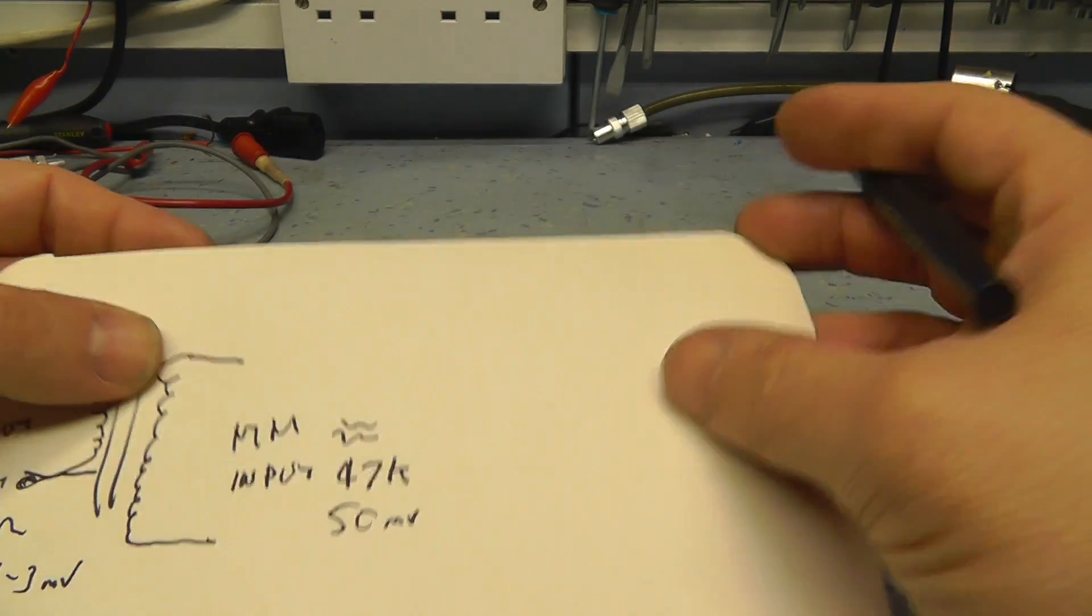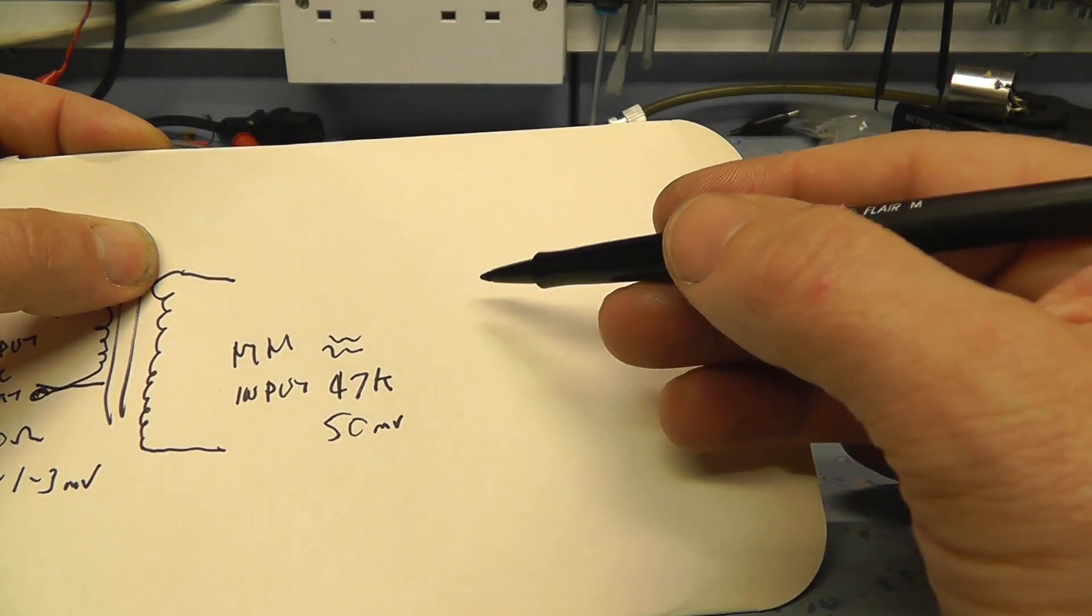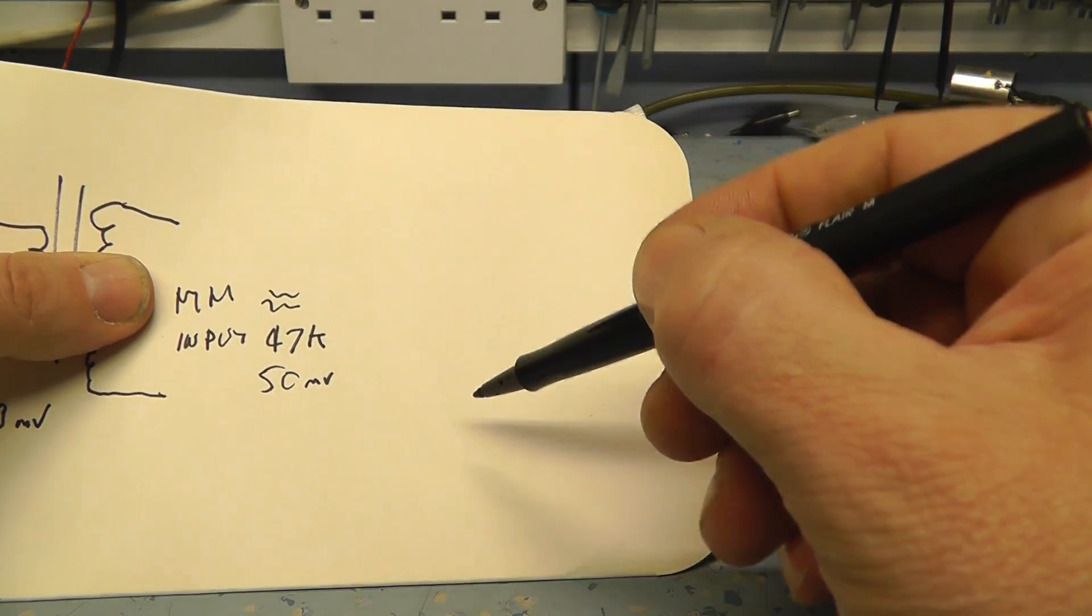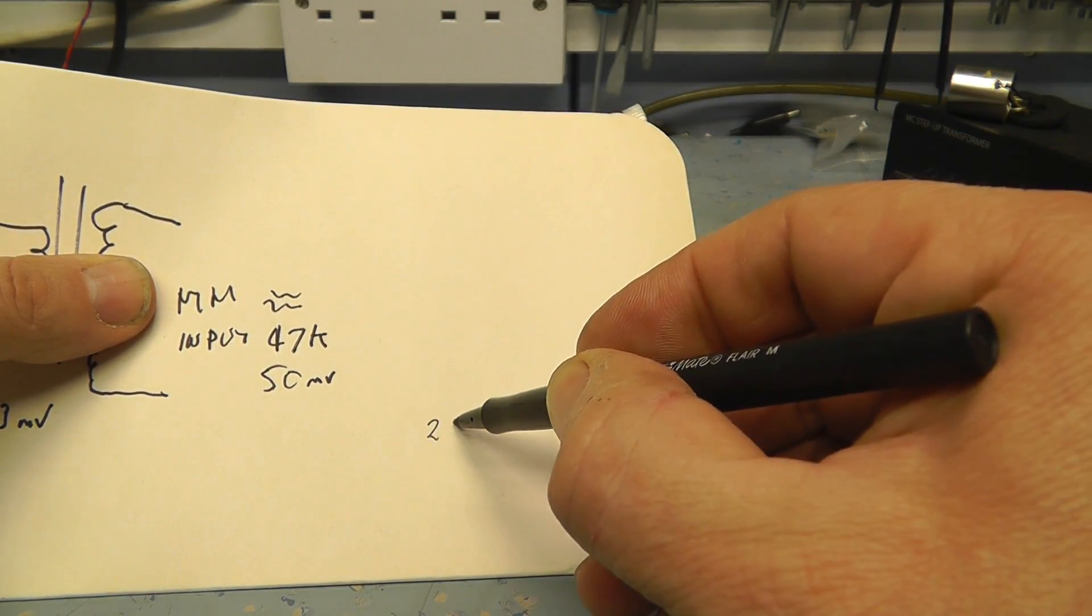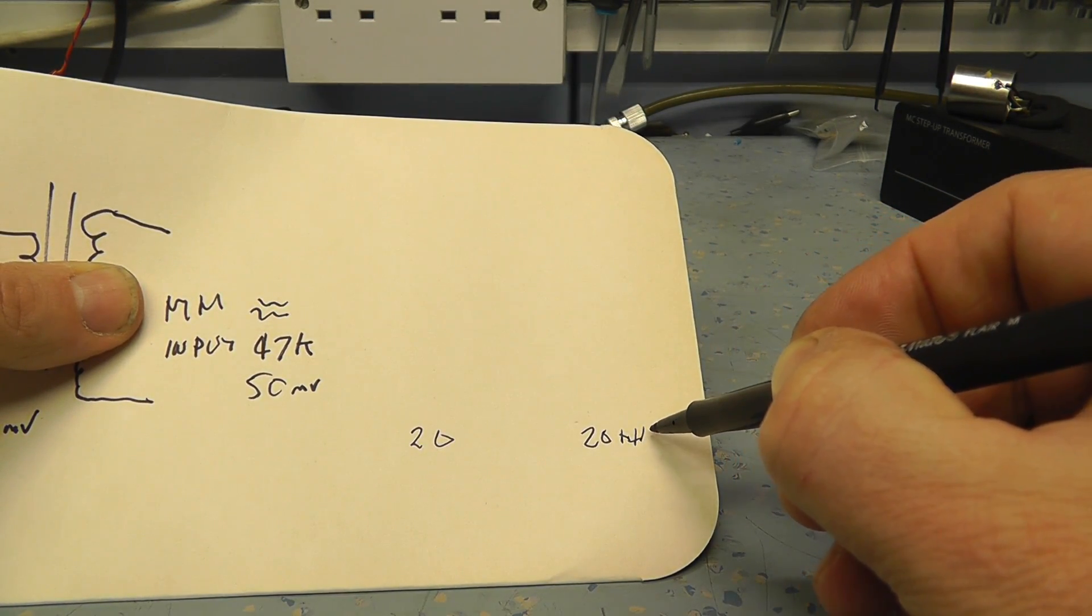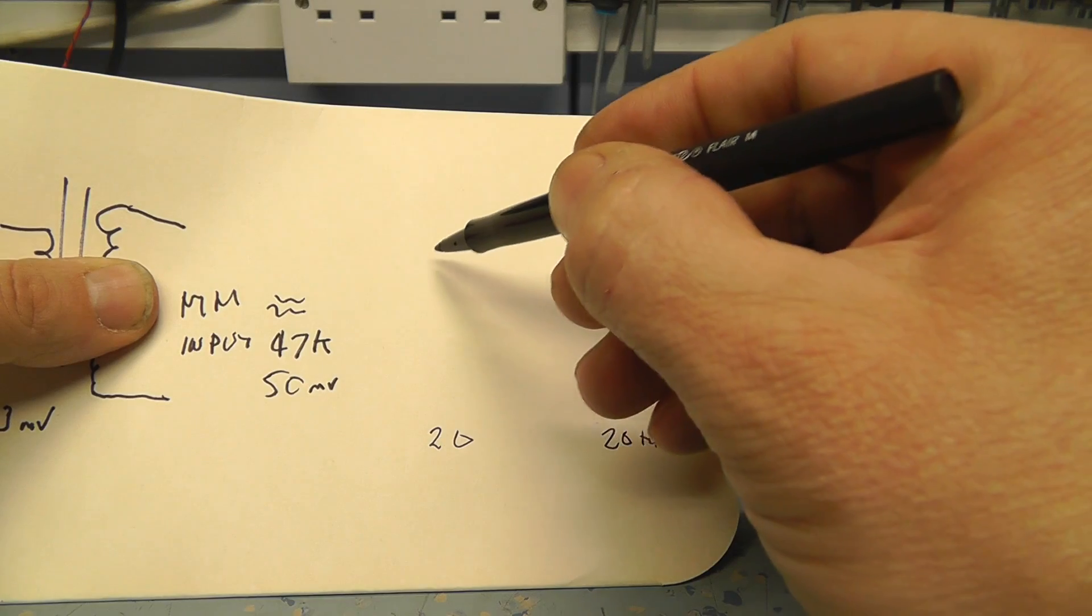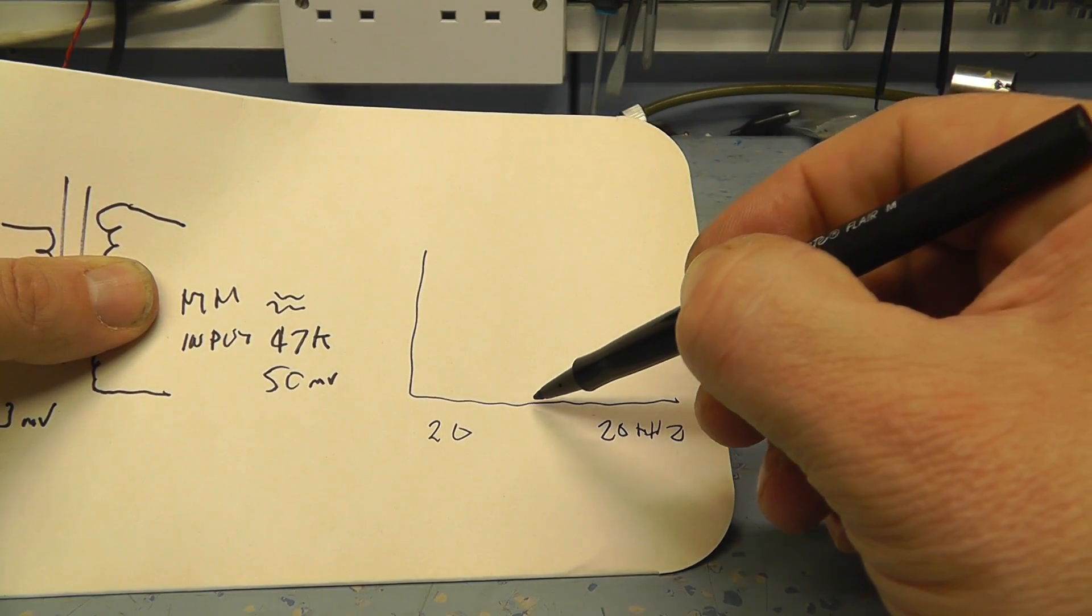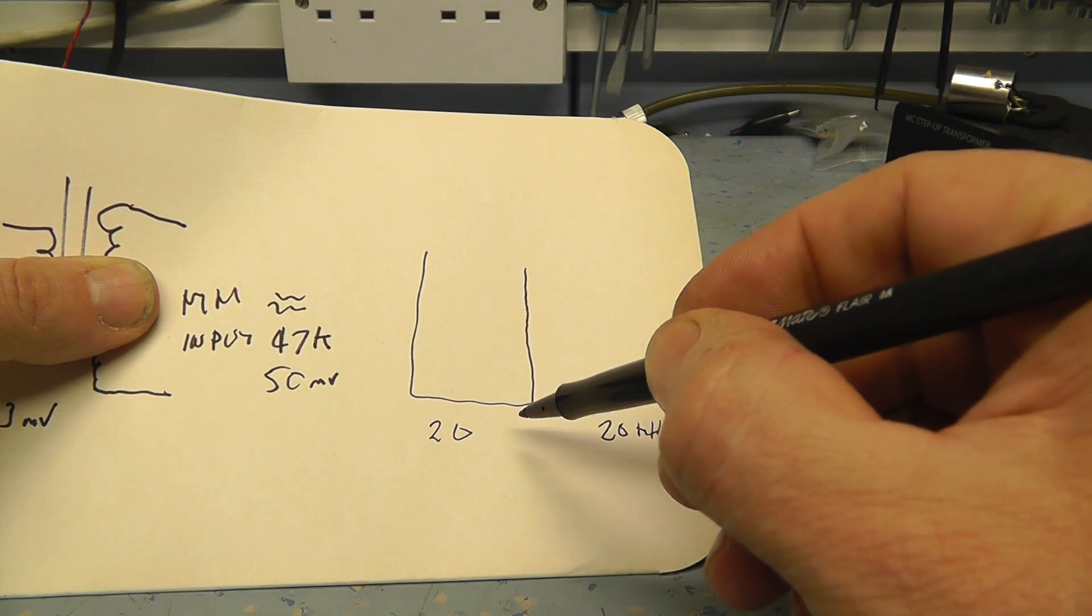Now, obviously the moving magnet input has the RIAA equalization built in. And what that is, just for those who don't know, you've basically got a frequency response of 20 hertz and 20 kilohertz. I'll just give you a rough idea what this is. So if we do a chart here, and this is your one kilohertz crossover point here.